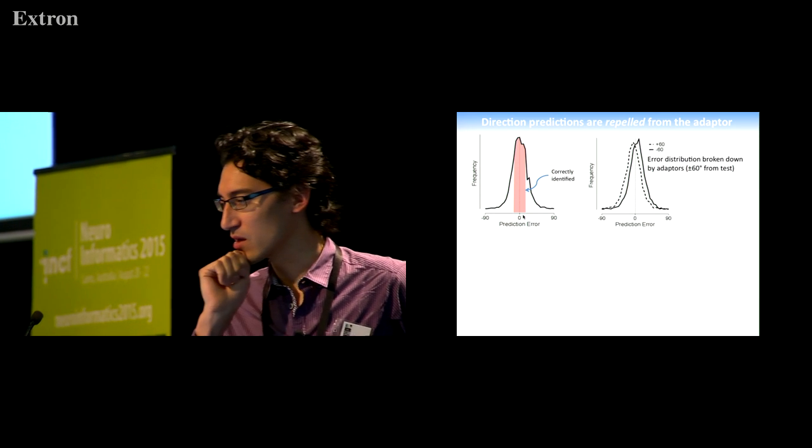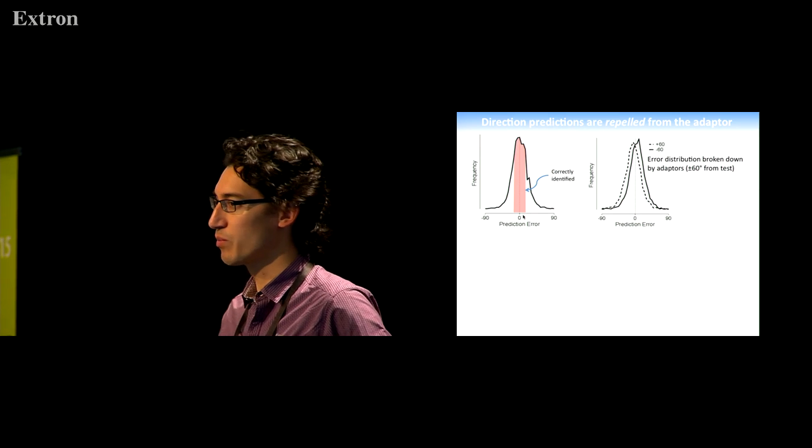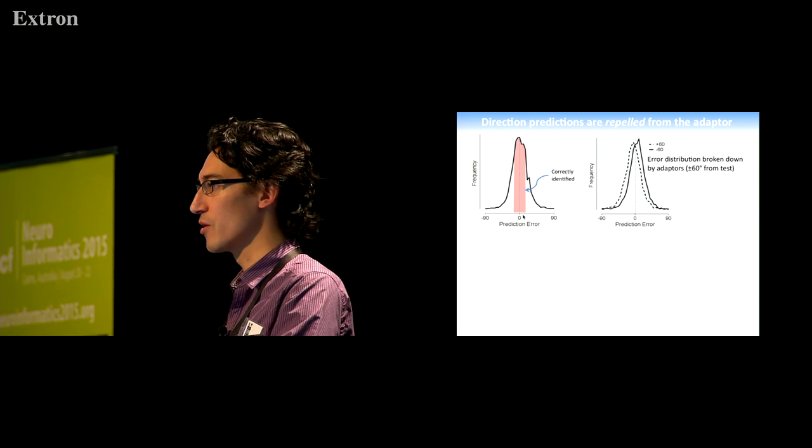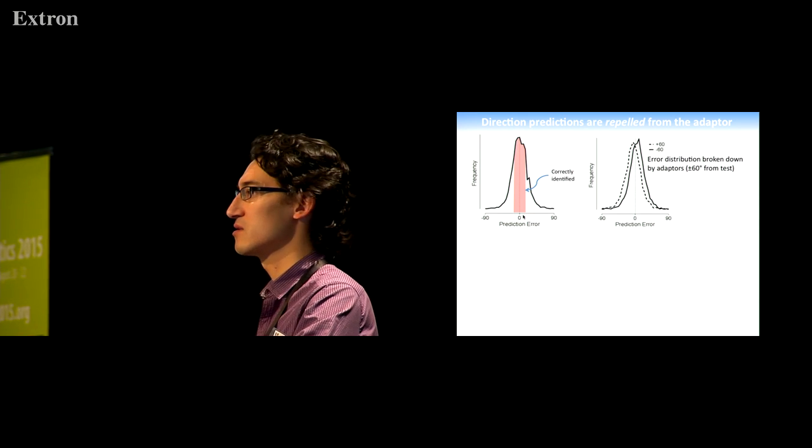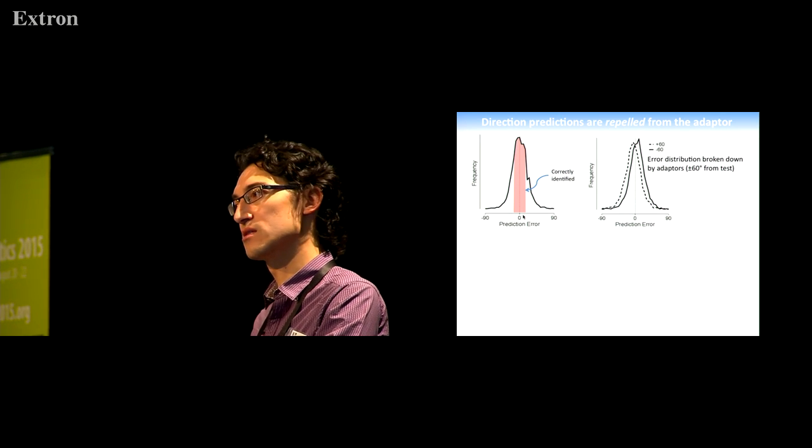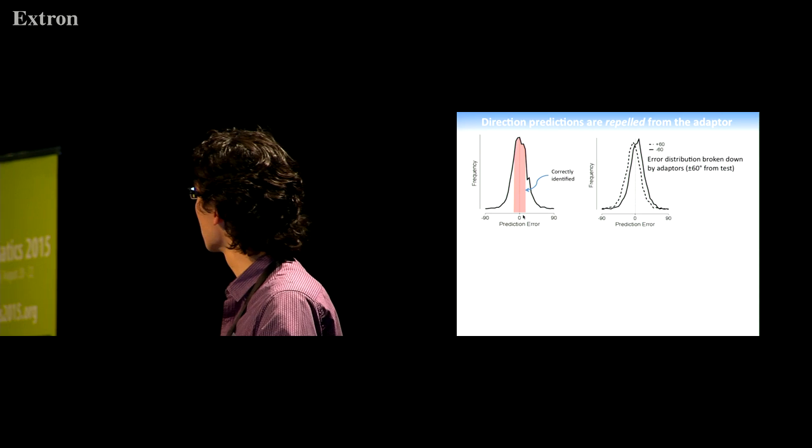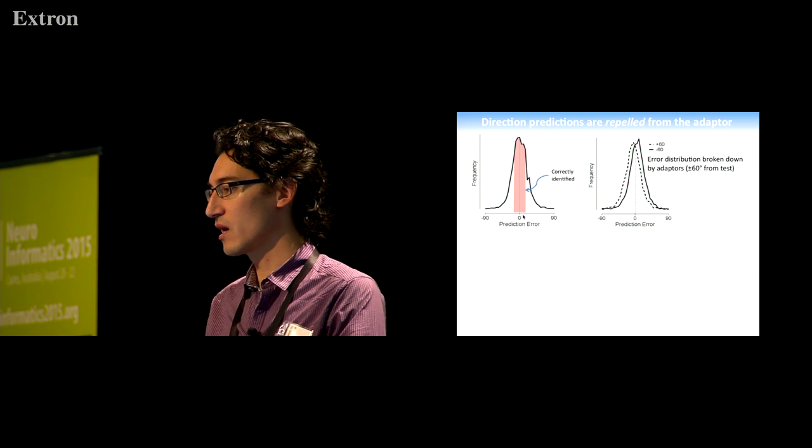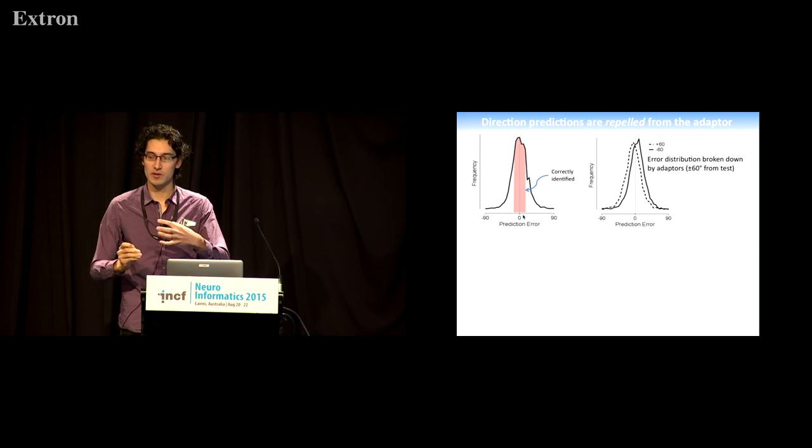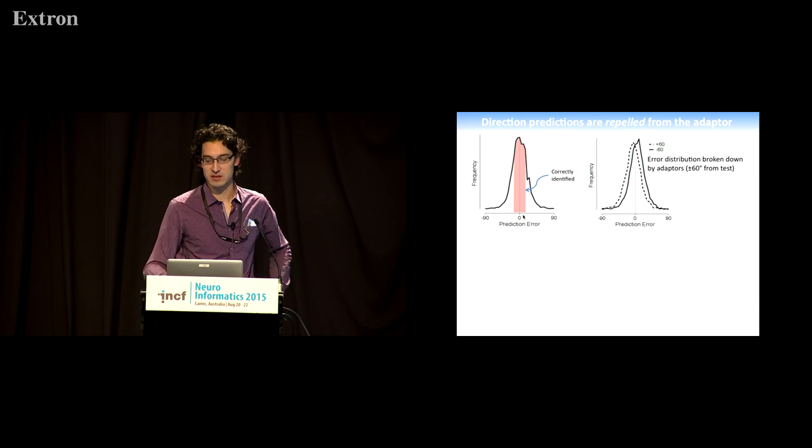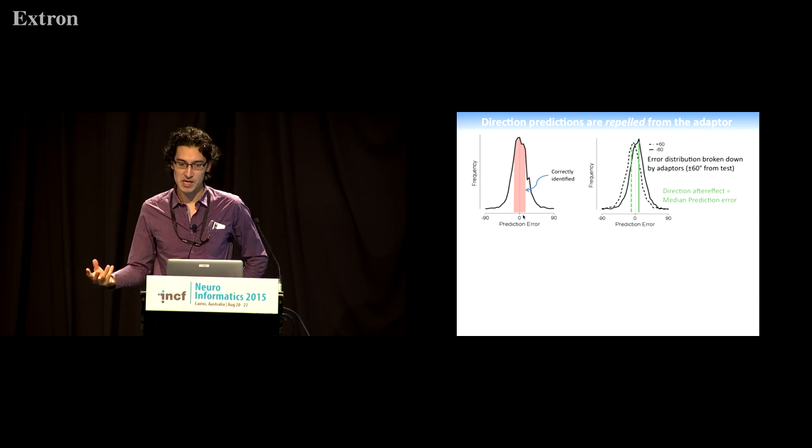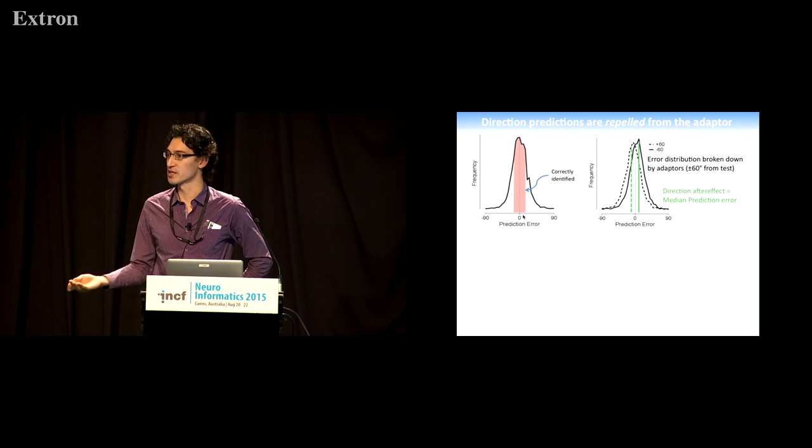For us, the interesting thing came when we broke down our error distributions based on the previous adaptation period. This is all cross-validated decoding—we train and test the decoder on different trials, but we also train and test the decoder at different time points. In this case, we're training the decoder in the adaptation period and testing it during the test period. What we can see now is that the error distributions of the decoding depend on the adapter, so in this case whether the adapter was plus or minus 60 degrees relative to the test. You can see that they're systematically shifted left or right. I'm going to call our median prediction error the direction aftereffect or the predicted direction aftereffect.